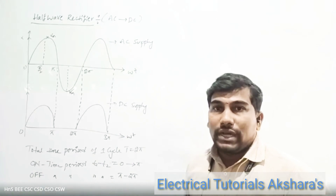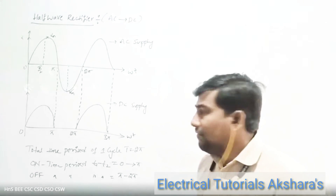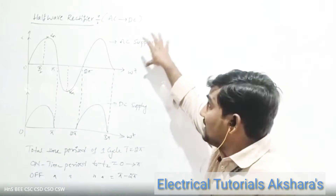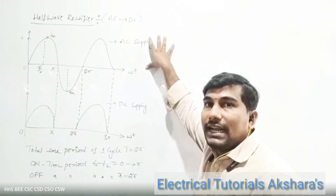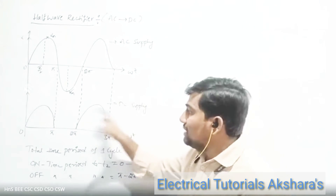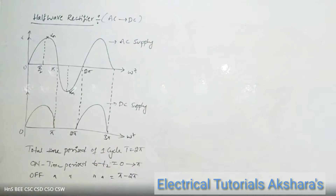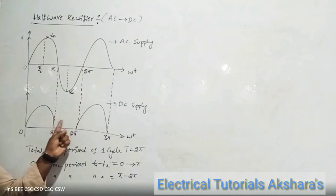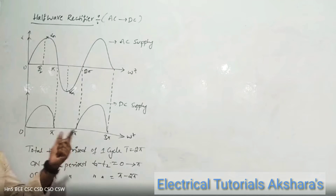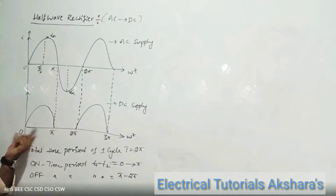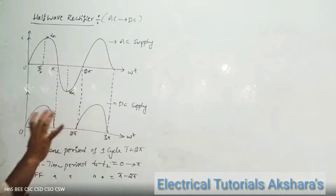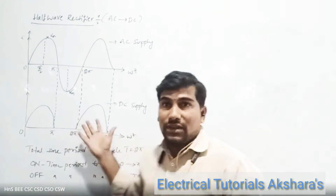We are finding the average value, RMS value, form factor, peak factor, etc. of the output waveform. This is the input waveform — whenever we give an AC alternating supply to the rectifier circuit, we get some output. The output waveform is the DC waveform. In the output waveform, one waveform is missing between π to 2π — only zero to π has a waveform. Based on these calculations, this total waveform corresponds to a half-wave rectifier.